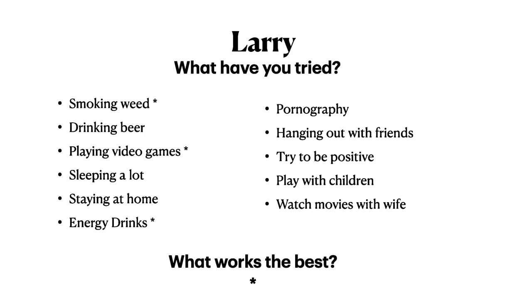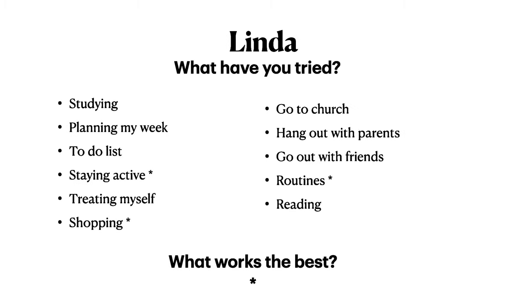Once the list is created, it's helpful to star the activities that appear to work best for the client. For Larry, it's smoking weed, video games, and energy drinks. For Linda, it's staying active, shopping, and routines. This is where we look at short-term benefits versus long-term costs. For each one, have the client list the benefits first, then the costs. For example, Larry may list the benefit of smoking weed as feeling relaxed and sleeping better, with the cost being dissatisfaction with life without weed. For Linda, shopping provides a short-term benefit of something new, but long-term costs of credit card bills loom.